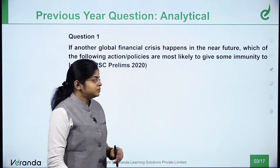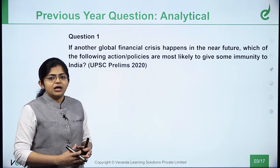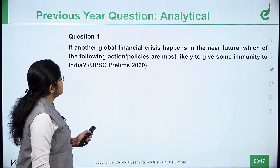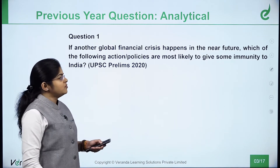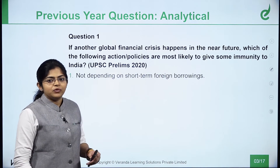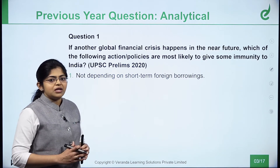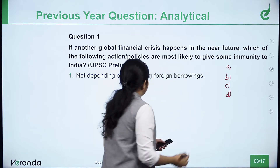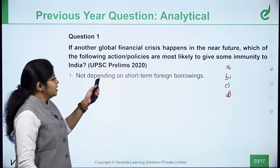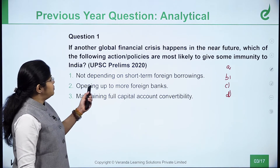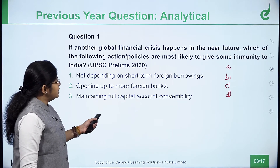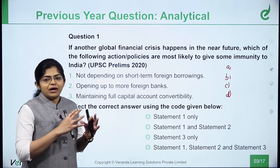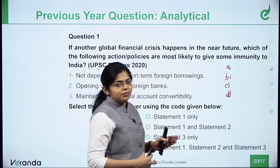Now let's get into the first question. I am going to show you various kinds of questions asked and any technique that can be used to solve them. The first question is: 'If another global financial crisis happens in the near future, which of the following actions or policies are most likely to give some immunity to India?' This question was asked in Prelims 2020. The options include: not depending on short-term foreign borrowings, opening up to more foreign banks, and maintaining full capital account convertibility.